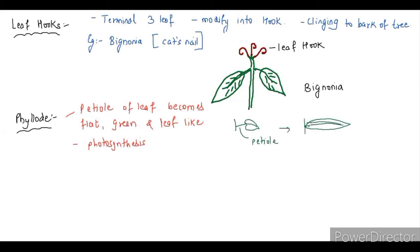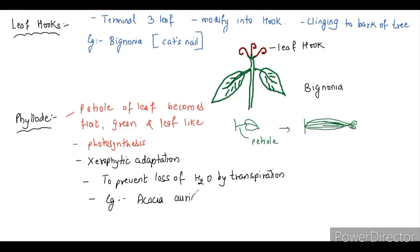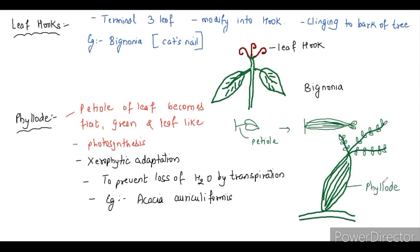They perform the function of photosynthesis. Why such modification is required? Only to prevent the loss of water by transpiration because it is seen in xerophytic plants and to protect themselves from browsing animals. So friends, you have understood the modification of the leaf, that is spine, tendril, leaf hook, and phyllode. See you in the next video with another part of morphology of flowering plant. Till then, thank you very much.